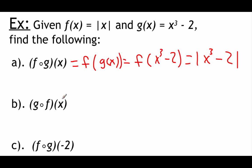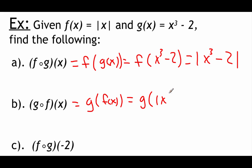Looking at the next one, it's written in the opposite order: g composed with f of x. That means we take our function g this time and plug f(x) into it. Rewriting in the other notation, it'd be g of |x|. Our function g is x³ − 2, but we replace x with |x|, which gives us |x|³ − 2.